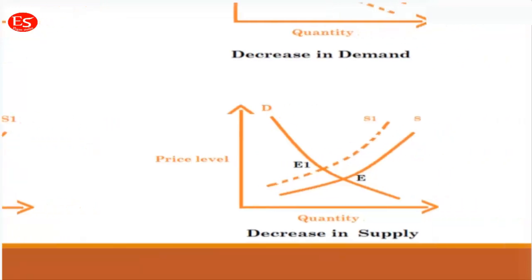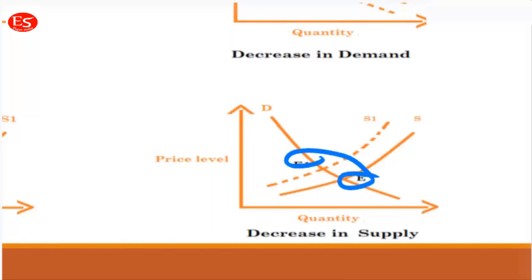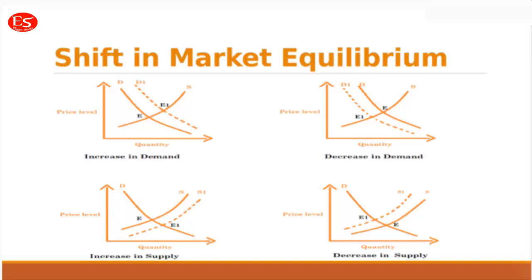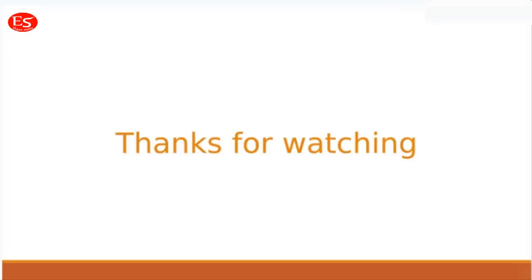Case 4: decrease in supply shifts the supply curve to the left side while demand remains the same. The equilibrium level shifts from E to E1, showing that a slight change in price affects quantity negatively by a very large value. These are the four aspects of market equilibrium with various shifts in the demand or supply curve. I hope this lesson gives you a very good knowledge about market equilibrium and the basics of demand and supply. Thank you so much for watching.